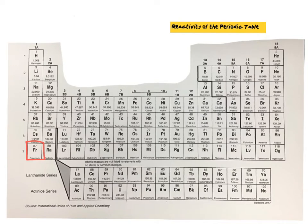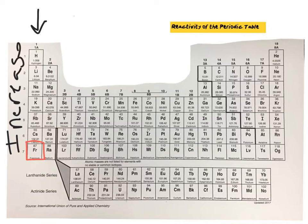Let's examine the reactivity of group 1 in a little bit more detail. In order to determine which metal in group 1 is the most reactive, our reactivity is actually going to increase as we move down in the periodic table. That means that lithium is going to be the least reactive metal in group 1.